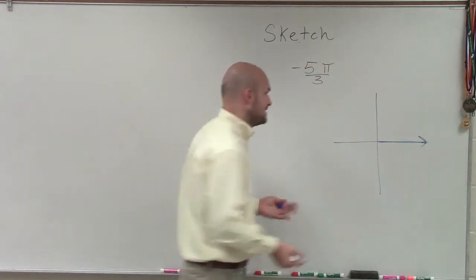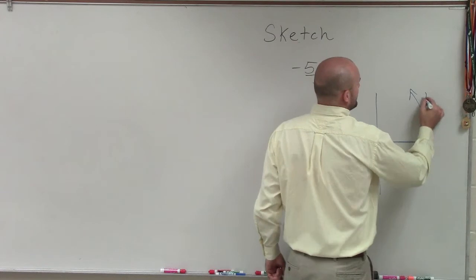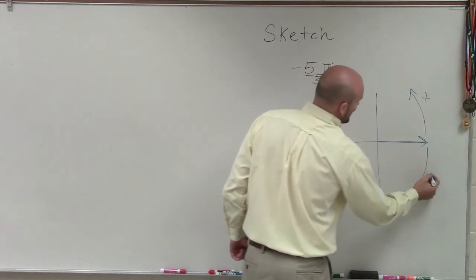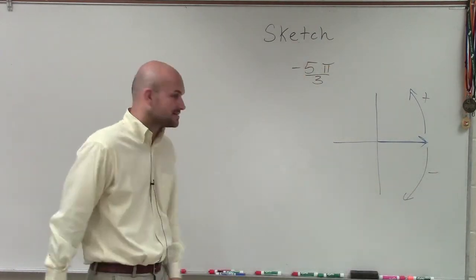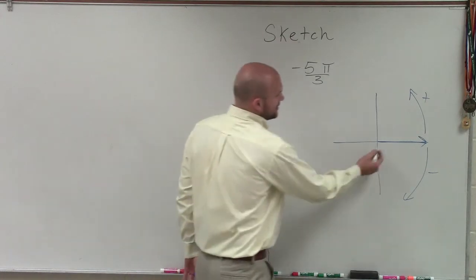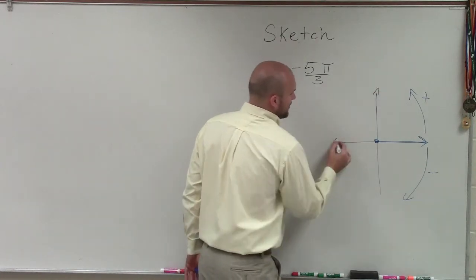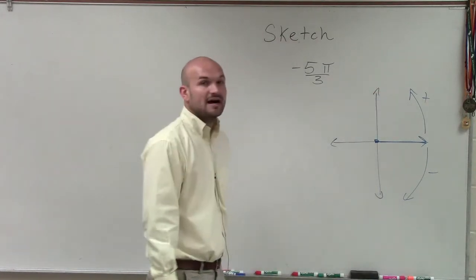If I'm going to be rotating a ray in the positive direction, that's going to be counterclockwise. And in the negative direction, we'll be clockwise. So I'm going to rotate a ray about the vertex over here at the origin, and I need to rotate it negative 5π over 3.